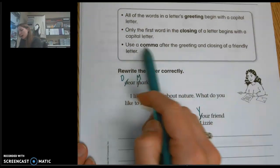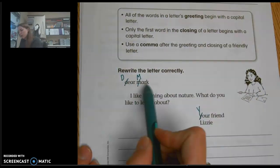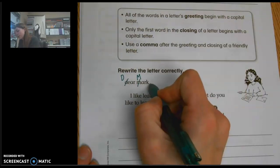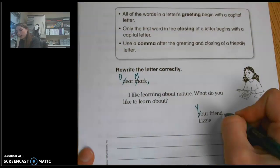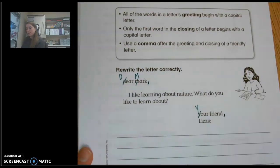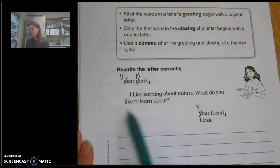Use a comma after the greeting and closing of a friendly letter. So here's my greeting, I'll put a comma there after my greeting. Your friend, which is the closing, I put a comma before I write the name. So we have Dear Mark, I like learning about nature. What do you like to learn about? Your friend, Lizzie.